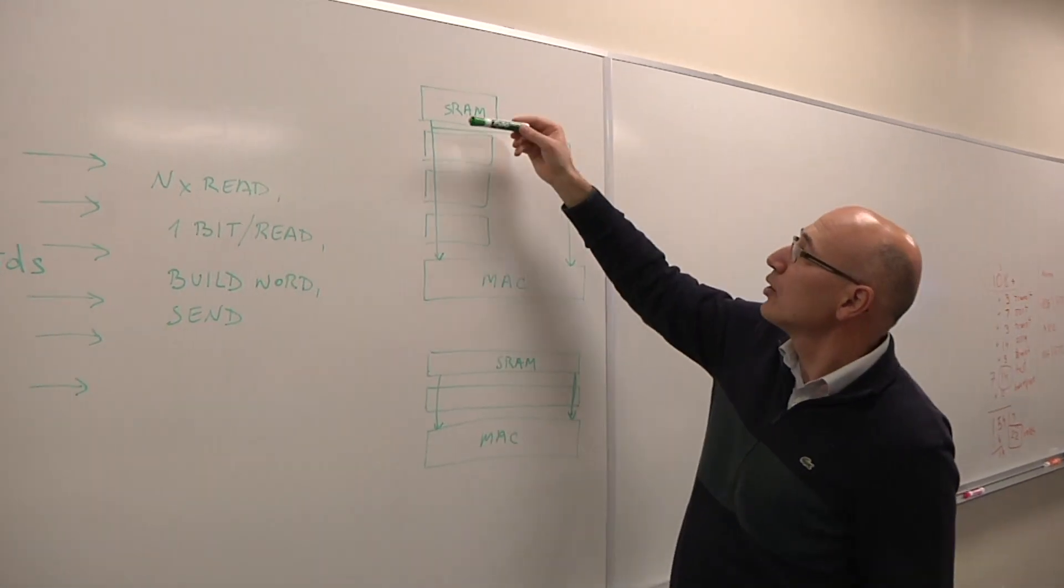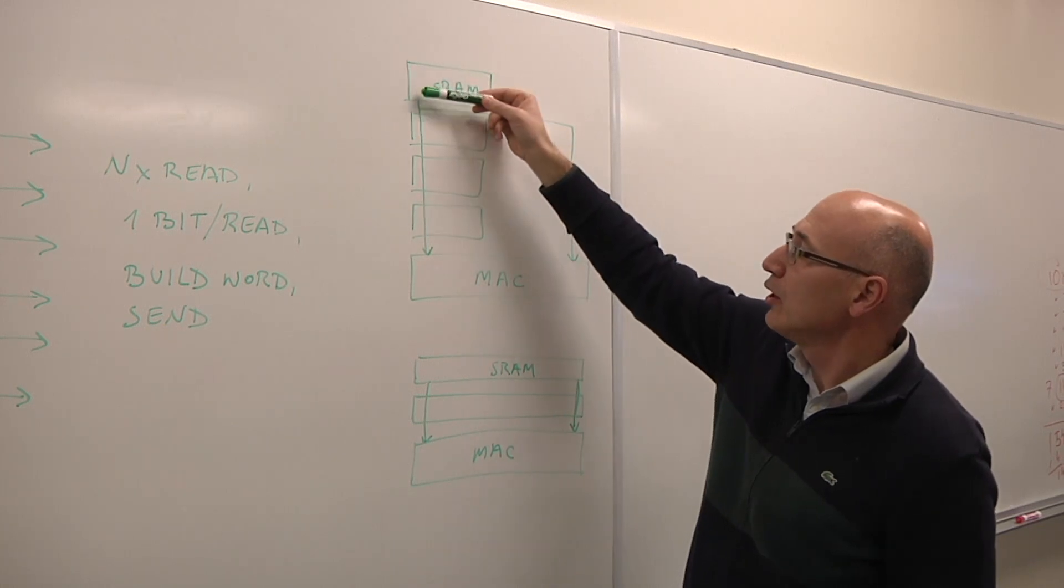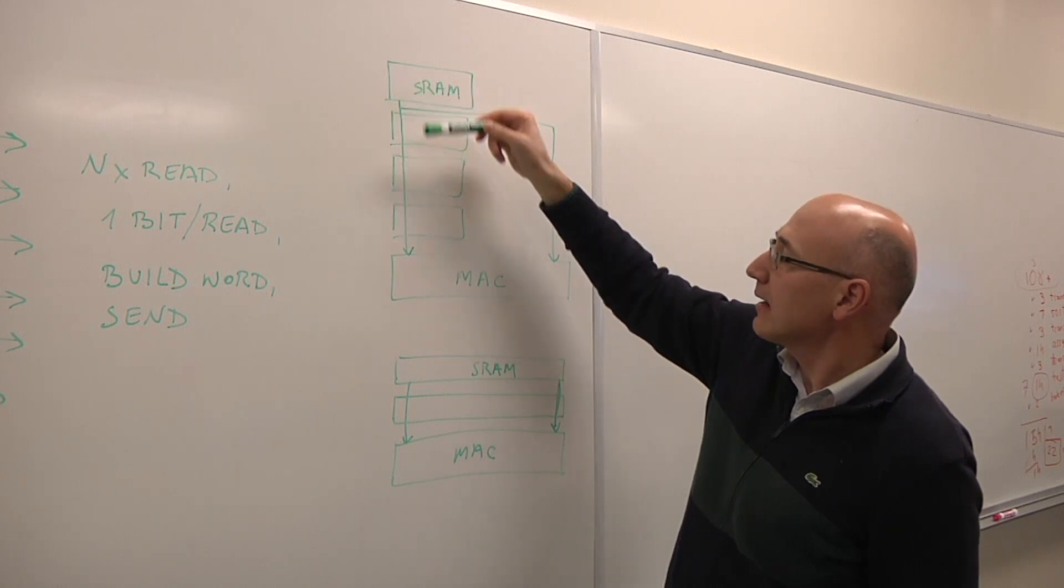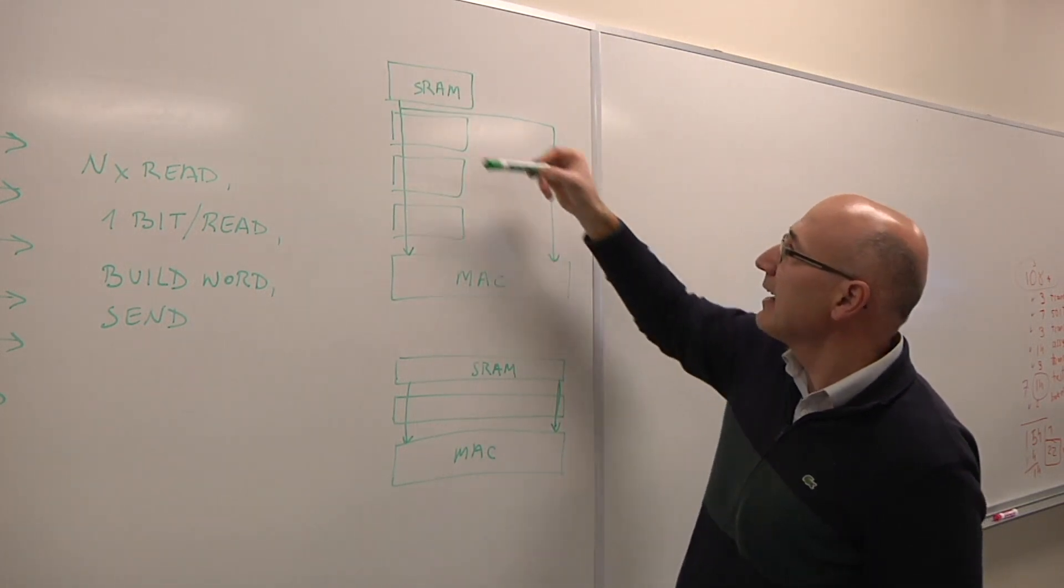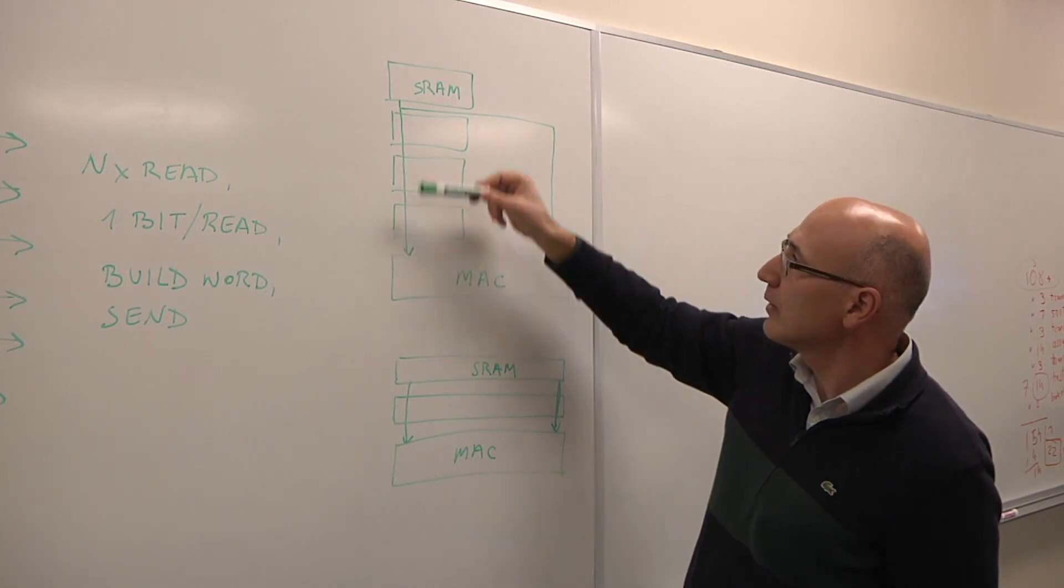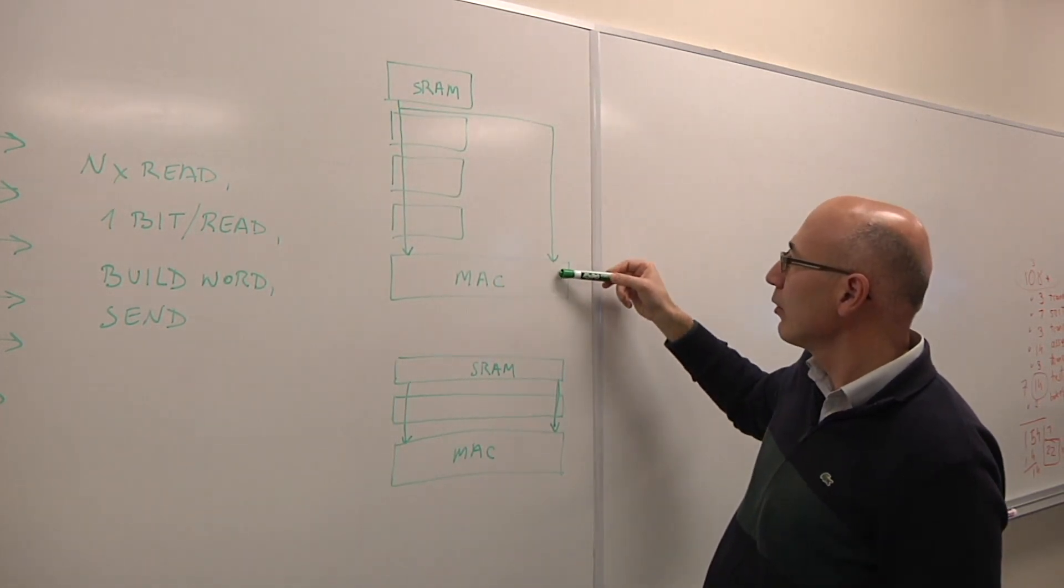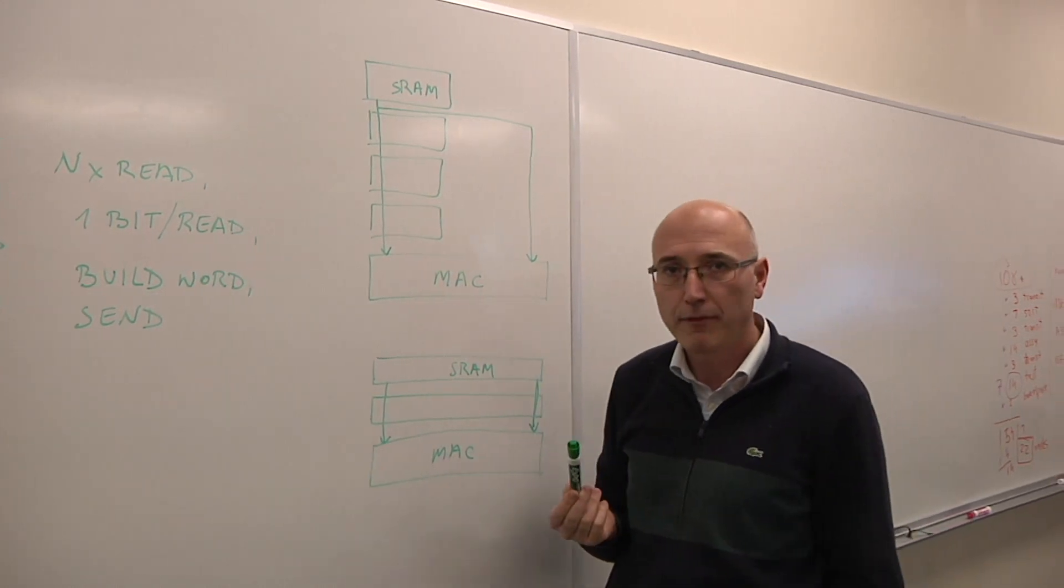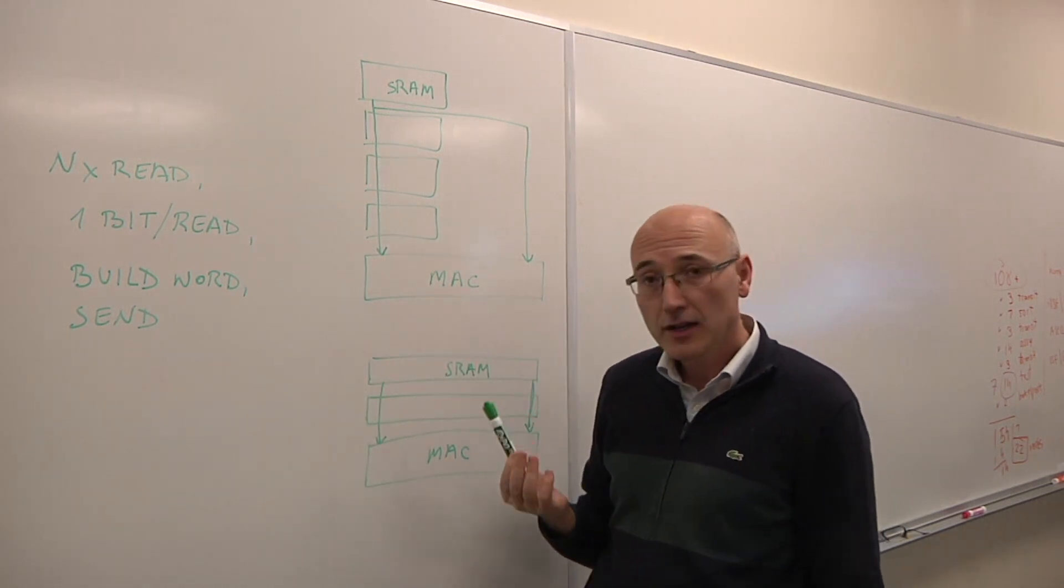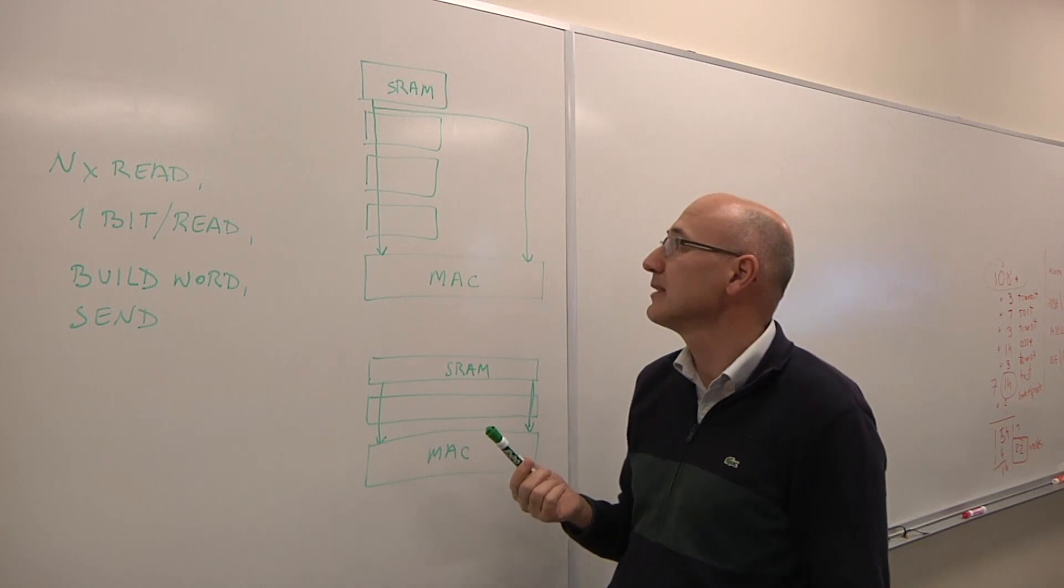Now, if you think about moving data from, say, the first bit of this memory macro to the MAC entity, well, depending where you need the data, you are going to have to cross a long distance to reach the MAC from the memory, even longer if you are going to the other extreme of this processing element. This is a long time, but in particular, a lot of power.